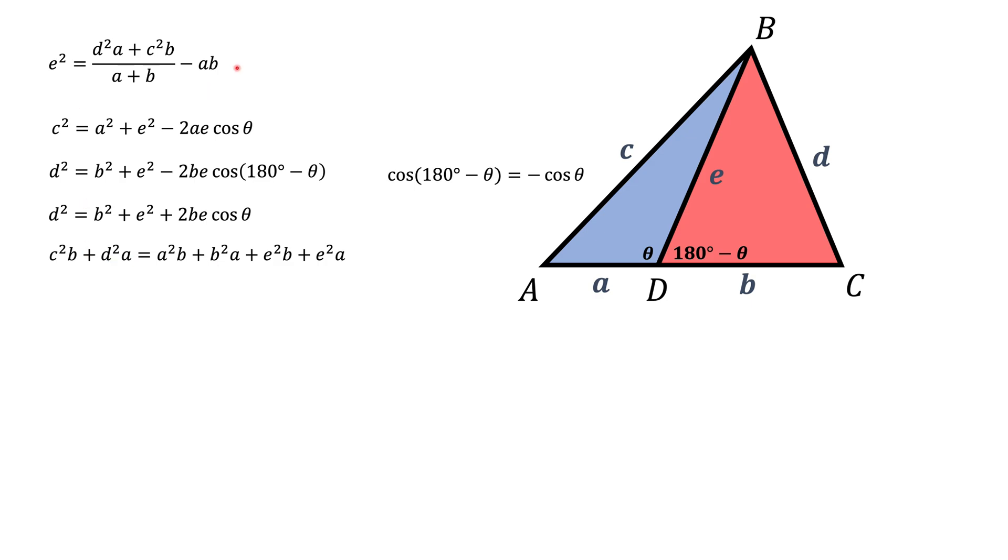If we want to obtain this expression, all we need to do is to notice that these two terms have a common factor of AB, and we're going to pull it out. And these two terms have a common factor of E squared, and we're also going to pull it out. If we do, this is what we're going to get. Now we're going to move this term to the other side and divide both sides of this expression by A plus B. And that's how we can get this formula.